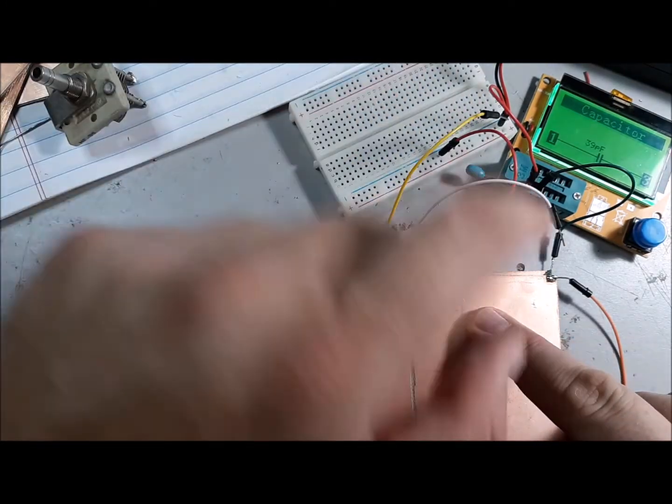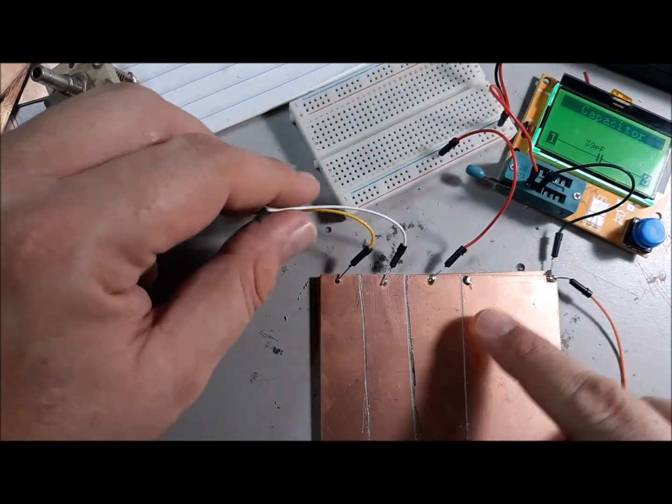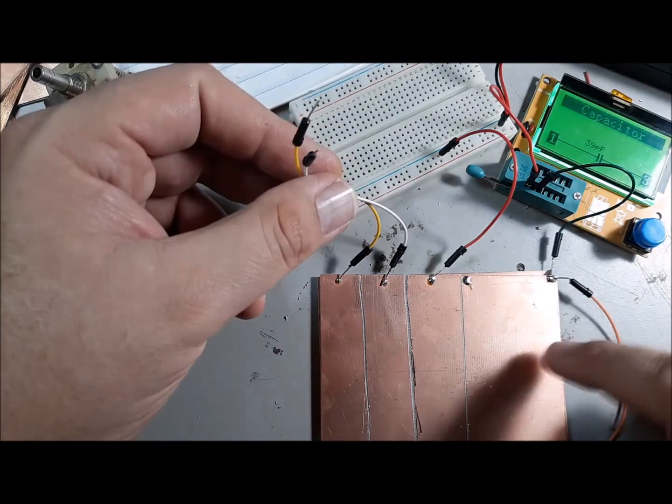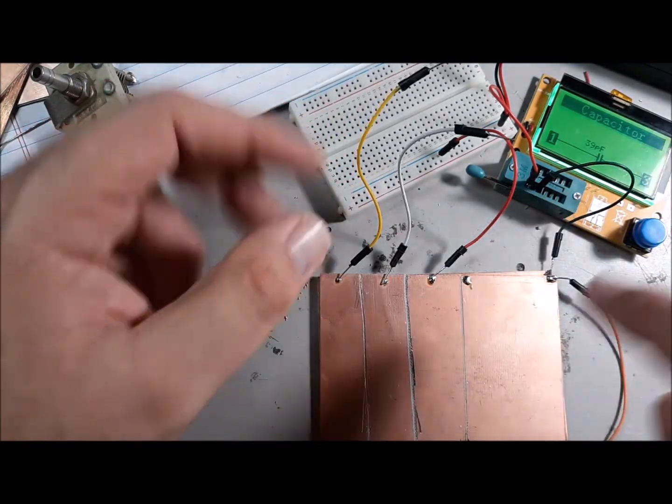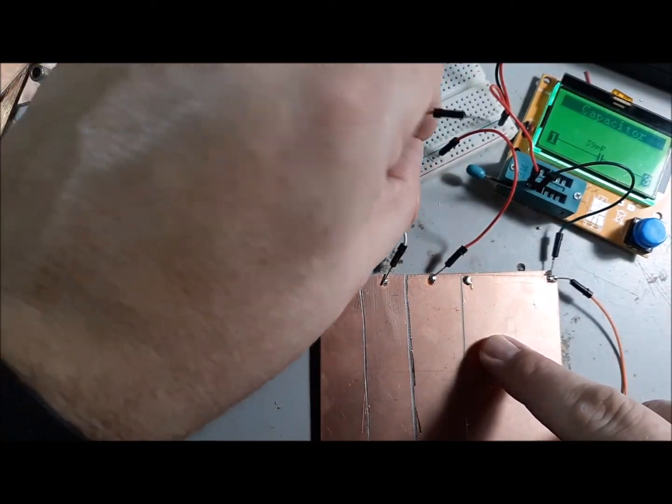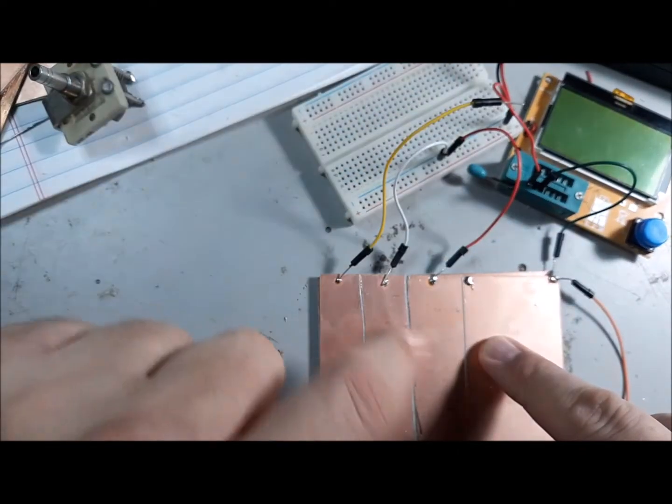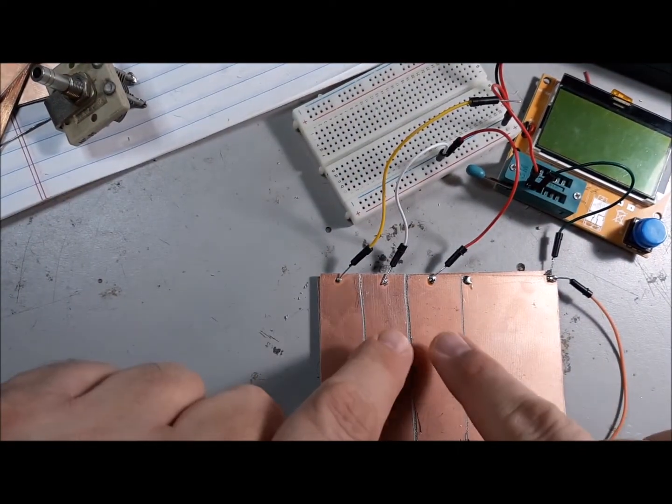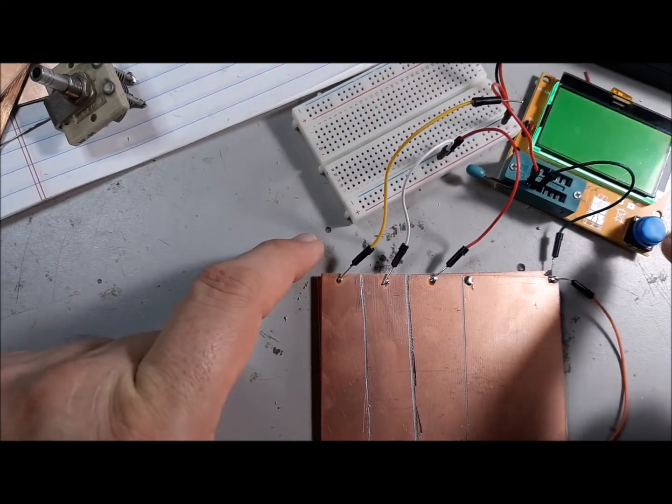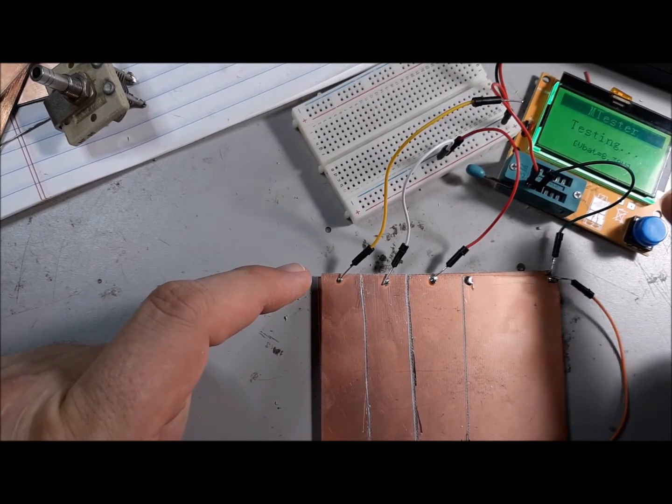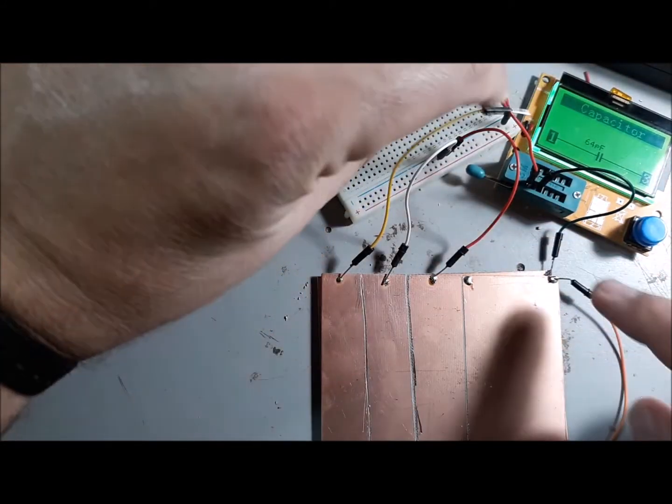Right now I've got just the red wire connected, and this green wire connects to the plate underneath it. So just the red wire is 39 picofarads, but if I connect the white wire and add this to it, so I've got these two connected, now I've got a larger capacitor and the capacitance is now 64 picofarads.